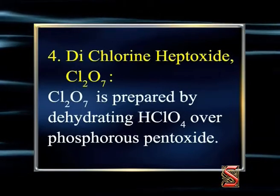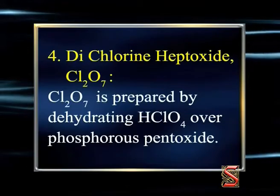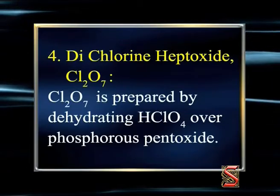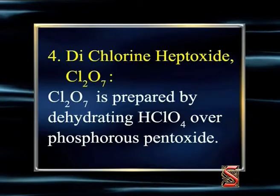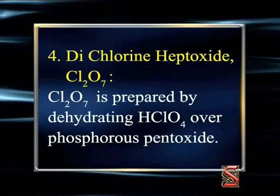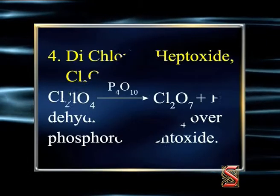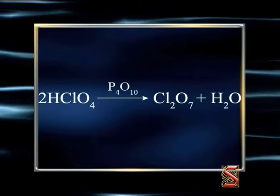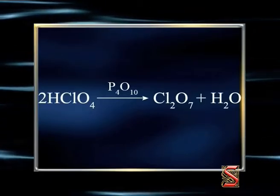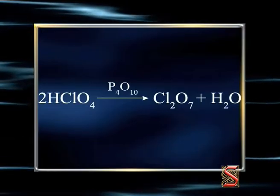Dichlorine heptoxide — the formula is Cl2O7. It is prepared by dehydrating perchloric acid, that is HClO4, over phosphorus pentoxide. The equation is: 2HClO4 gives rise to Cl2O7 plus H2O.